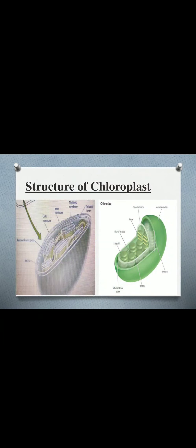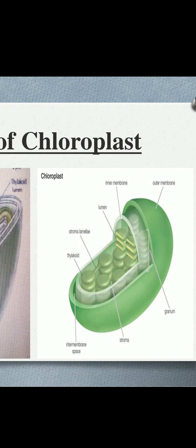Regarding structure, the chloroplast is a large organelle, five to ten micrometers long. It is a double membrane organelle. There is also a third internal membrane system called the thylakoid membrane. Within the thylakoid membrane we have flat disc-like structures; each disc is called a thylakoid. These thylakoids are stacked one above another, and the stack is collectively called a granum.